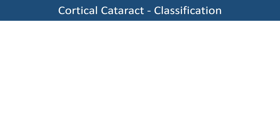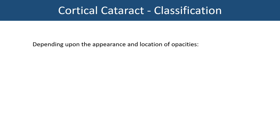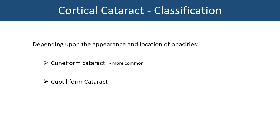Coming to the classification of cortical cataract, there are two kinds depending on the appearance and location of the opacity. One is the cuneiform variety and another is the cupuliform type. Out of these two, the cuneiform variety is more common.